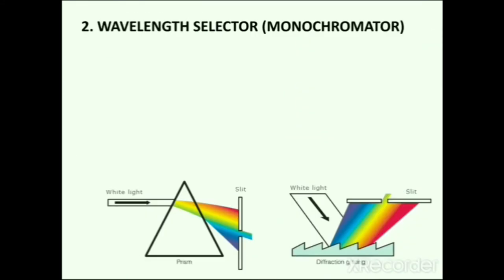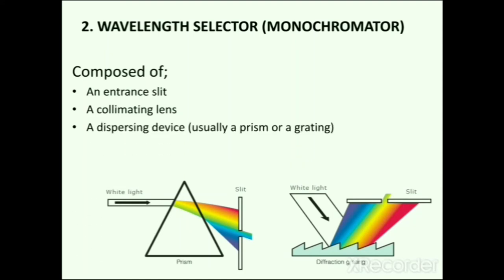Next part of the instrument is the wavelength selector — the monochromator. A monochromator is an optical device that transmits a mechanically selected narrow band of wavelengths of light chosen from a wider range available at the input. It is composed of an entrance slit, a collimating lens, a dispersing device (usually a prism or grating), a focusing lens and an exit slit. Light radiation is passed through the entrance slit and incident upon the dispersing device. The dispersing device converts the light into its constituent wavelengths. The exit slit allows only a single wavelength to pass at one time, so the monochromator converts polychromatic light into monochromatic light.